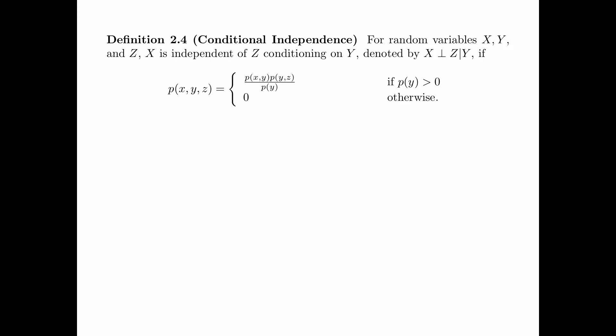Definition 2.4 is about conditional independence. For random variables X, Y, and Z, X is independent of Z conditioning on Y, denoted X ⊥ Z given Y, if P(X,Y,Z) equals P(X,Y) times P(Y,Z) divided by P(Y) when P(Y) is greater than 0, and P(X,Y,Z) equals 0 if P(Y) equals 0.